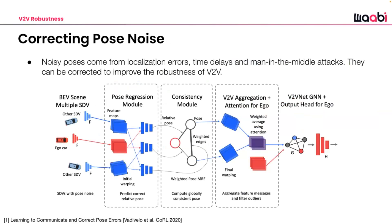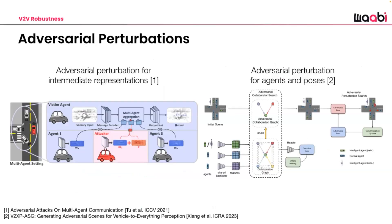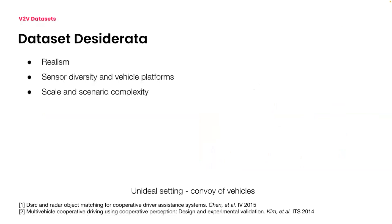There can be errors and noise in vehicle-to-X communication, so robustness is essential. Standard approaches incorporate noise into training — for example, adding errors in pose or latency between sent messages to account for noise during feature aggregation before final perception and prediction. Adversarial perturbations can also be simulated by optimizing noise applied to feature maps to degrade performance, then using augmentation strategies to improve robustness. You can also adversarially search for challenging vehicle placements in a V2V setting.